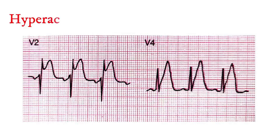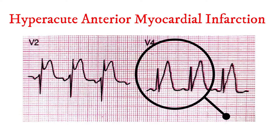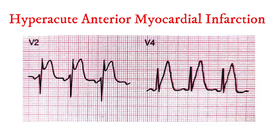Myocardial infarction produces regional damage. The ECG reflects the affected area due to myocardial infarction. In anterior myocardial infarction, the first changes that happen are extensive ST segment elevation across the chest leads.